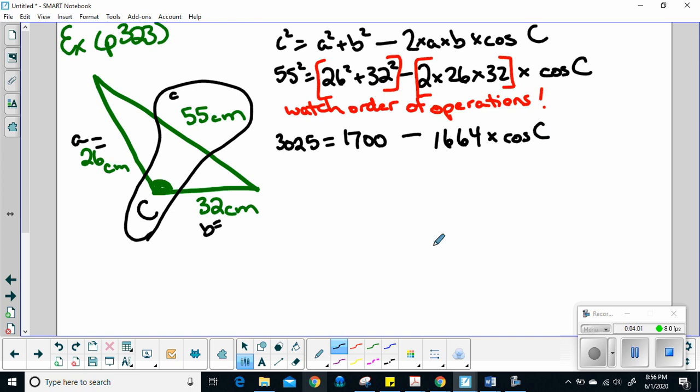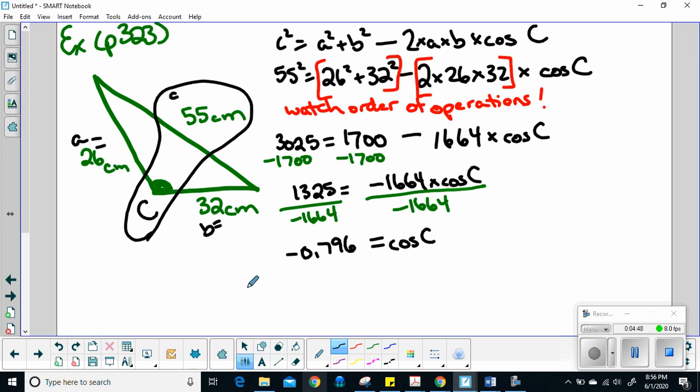Let's simplify. 55 squared is 3025 equals 26 squared plus 32 squared, which equals 1700, minus 2 times 26 times 32, which equals 1664 times cosine C. So 3025 minus 1700 equals 1325 equals negative 1664 times cosine C. Divide by negative 1664 equals negative 0.796. Angle C is going to be equal to cos inverse of negative 0.796. Please don't clear your calculator, just hit second cos and then your ANS button. So my angle is 142 degrees, round that to eight degrees.